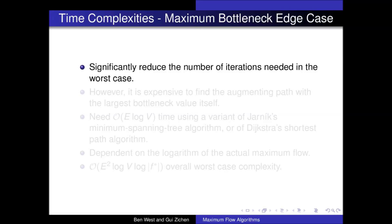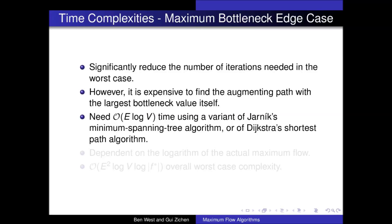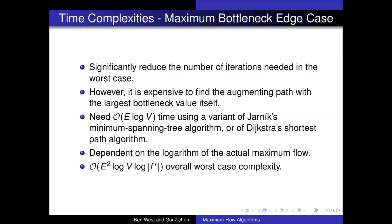Now let us analyze the two rules the Edmonds-Karp algorithm uses to choose the augmenting path: first, to choose the augmenting path with the largest bottleneck value, and second, to choose the augmenting path with the smallest number of edges. Picking augmenting paths with the largest bottleneck value is essentially a greedy approach. Although it will ensure that the number of iterations before the algorithm terminates will be significantly reduced in the worst case, it's expensive to find the augmenting path with the largest bottleneck value itself. In fact, we need O(E log V) time to compute it in each iteration. Furthermore, the time complexity is still dependent on the logarithm of the actual maximum flow, leading to O(E² log V log f*) worst case complexity.